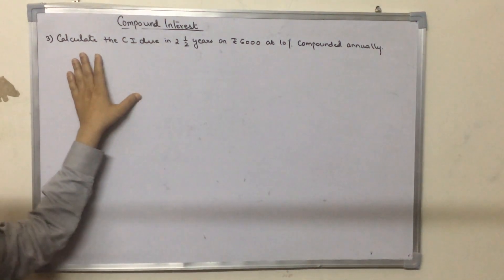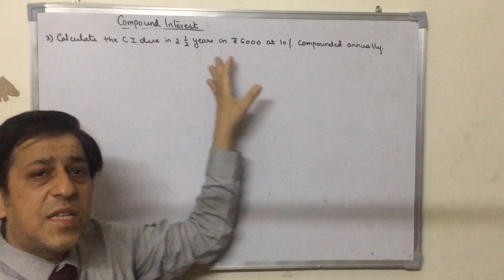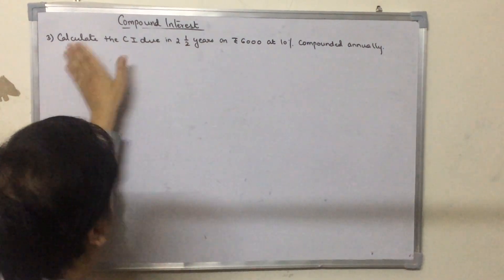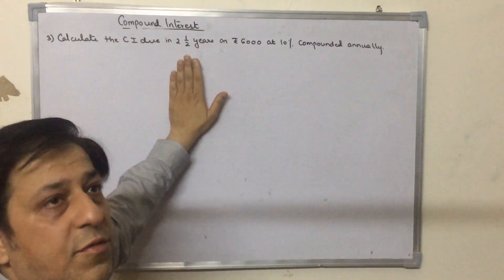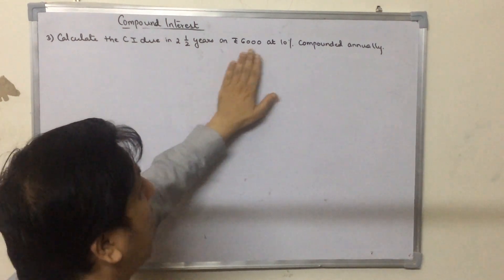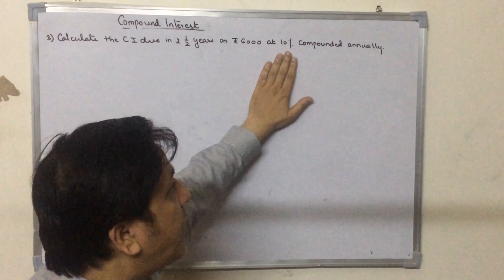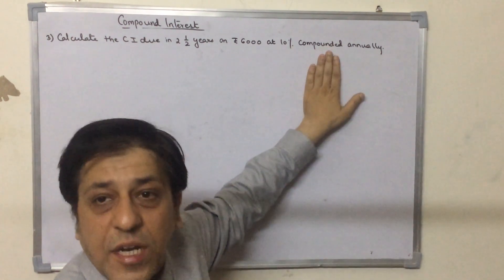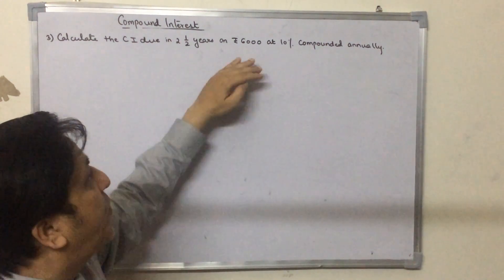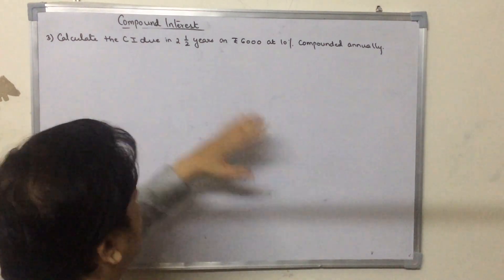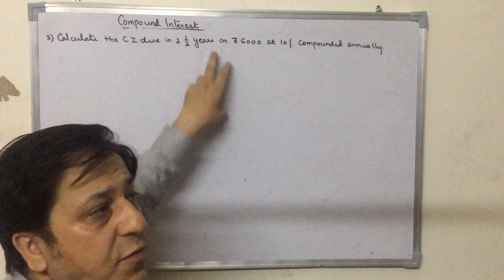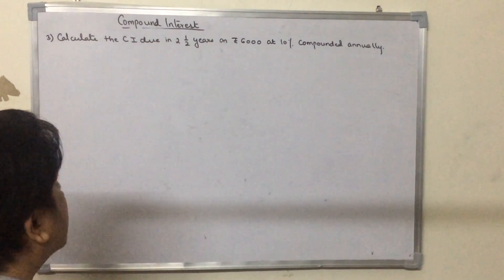So now children, we will see another example. The three examples that we have seen so far, in all those examples the time was a whole number. Now here in this case, it is a mixed fraction. We are going to calculate the compound interest due for two and a half years on 6000 rupees lent out at 10%, wherein the compound interest is occurring annually. So let's see how we go about with these types of questions.